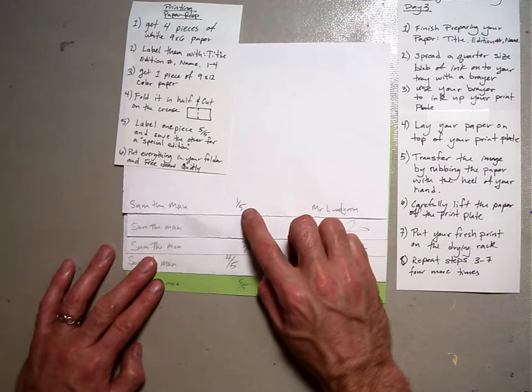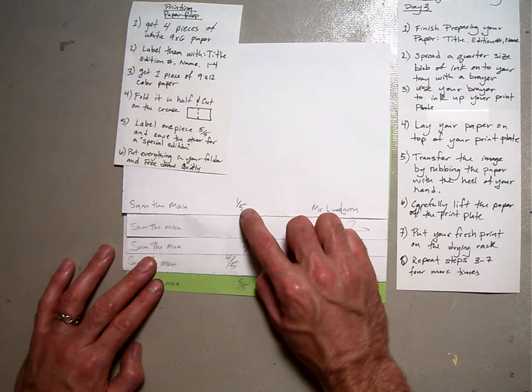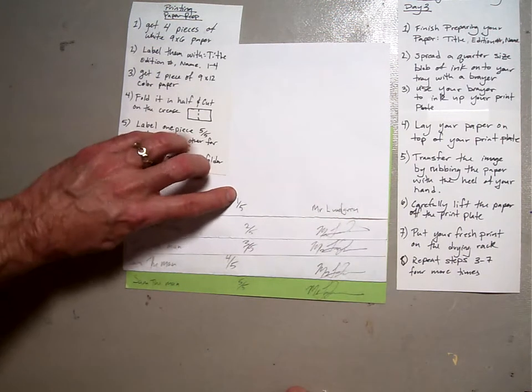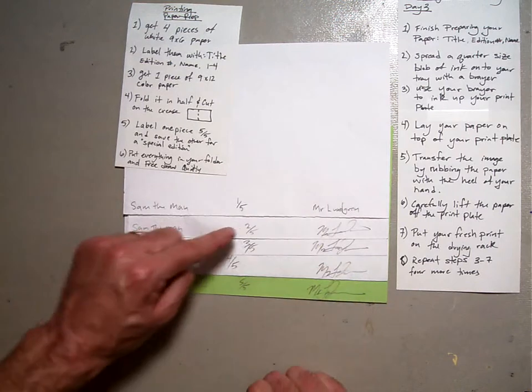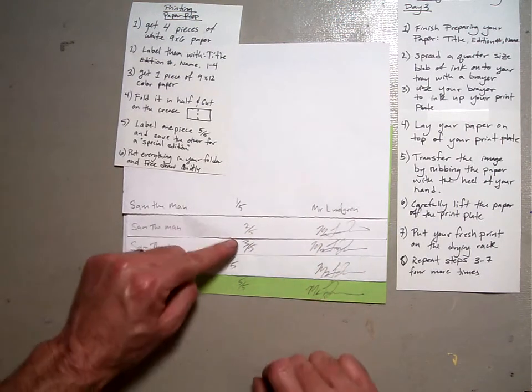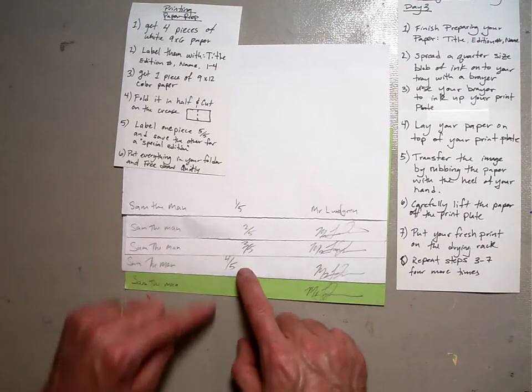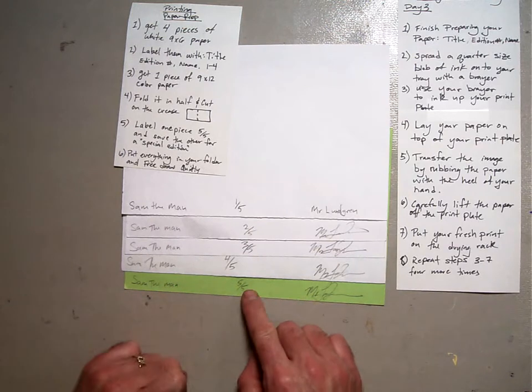So this bottom number is how many prints are in the full edition. The top number is which print in the edition it is. So this is the first print out of five prints, second print out of five prints, third print out of five, fourth print out of five, fifth print out of five. You get the idea.